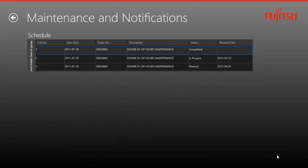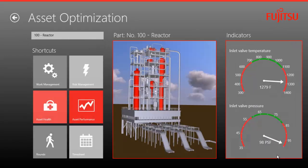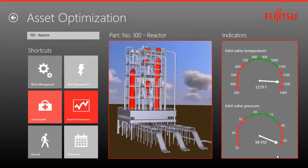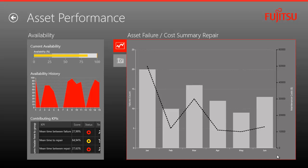I can click on the maintenance notifications and see that there's a planned maintenance window coming up tomorrow. I'll go ahead and work with my production supervisor to schedule the work to be completed during that window. Clicking on asset performance shows me historic KPIs that provide information supporting the resolution. I'm shown the historic performance of this component as well as the mean time between failures, mean time to repair, and mean time between repairs.